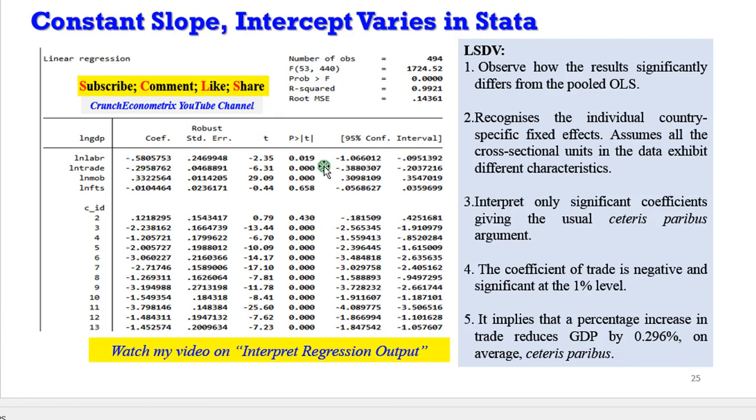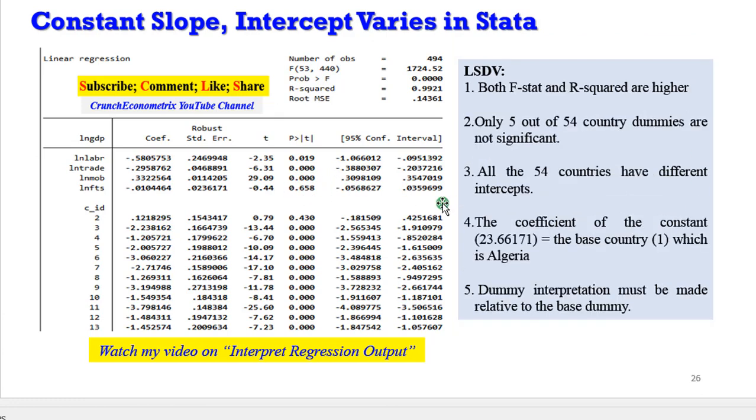It has a negative coefficient but significant at the 1% level. This shows that a percentage increase in trade will reduce GDP by 0.296% on average, ceteris paribus. If you compare the pooled OLS and the LSDV model, you will observe that in the LSDV model both the F statistics and R squared are higher.